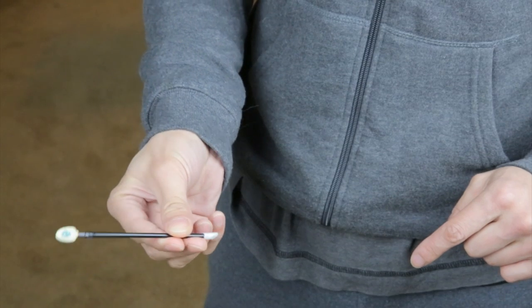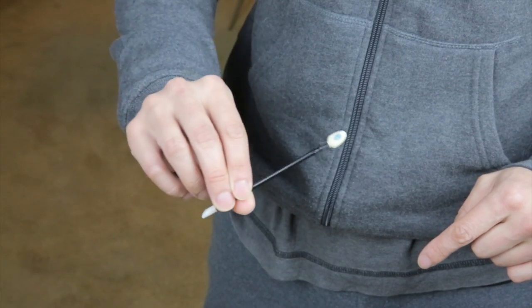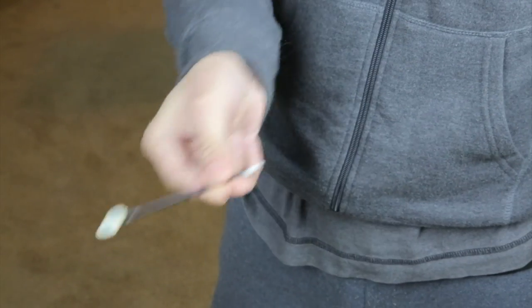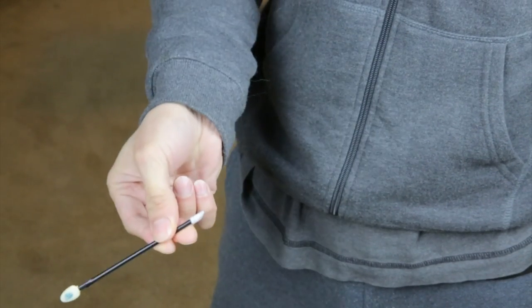But if I do a slight twist in midair like this, you can see that the other side appears to have a marking as well. So I can go back and forth like this and it'll look like it's on both sides.